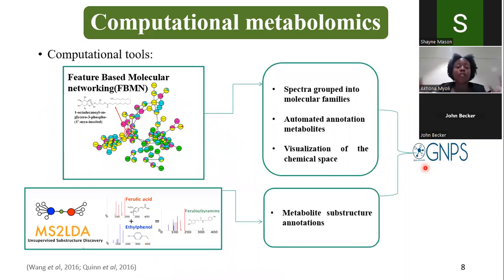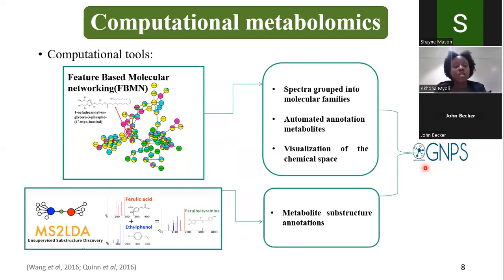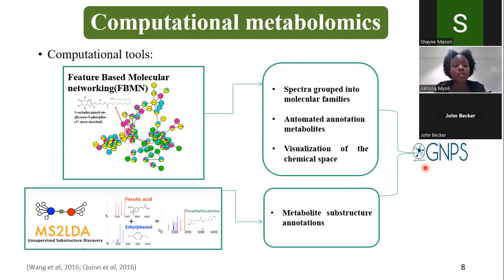In this project, we took full advantage of metabolomics computational tools in the form of feature-based molecular networking and MS2LDA. Feature-based molecular networking works on the basis that compounds similar in structure will fragment to produce similar fragmentation patterns, and based on those patterns, compounds are grouped into molecular families. This tool also enables automated annotation of metabolites and visualization of the chemical space of a crude extract or special sample. MS2LDA is an unsupervised substructure discovery tool that annotates the building blocks or substructures of a compound.